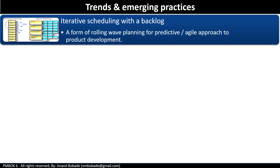Another trend is iterative scheduling with a backlog. We are all aware of the traditional scheduling approach in which first we get detailed requirements and then have a detailed schedule to deliver the agreed scope. But with changing industry dynamics, changing requirements and ever-changing technology landscape, there is a need for speed — customers want to see something working, something referred to as a minimum viable product, MVP. And this is where iterative scheduling helps. Typically, this is done in an adaptive environment — it is a form of rolling wave planning for adaptive, agile, or hybrid approaches to product development.